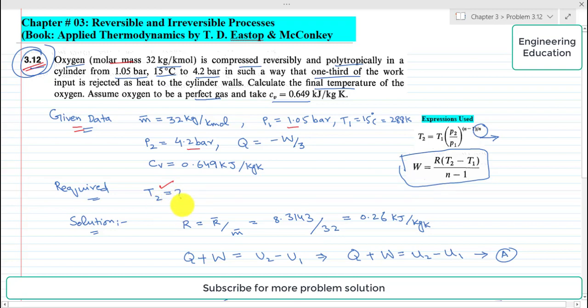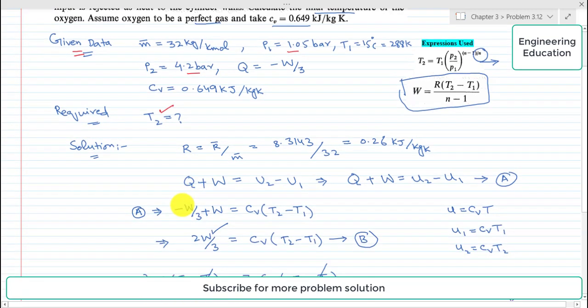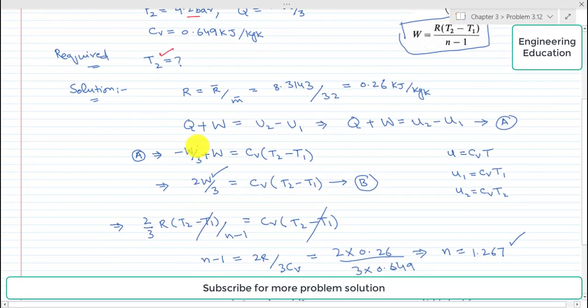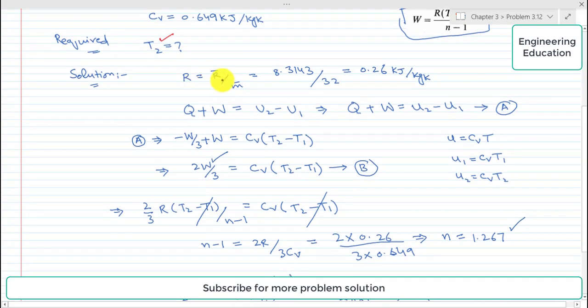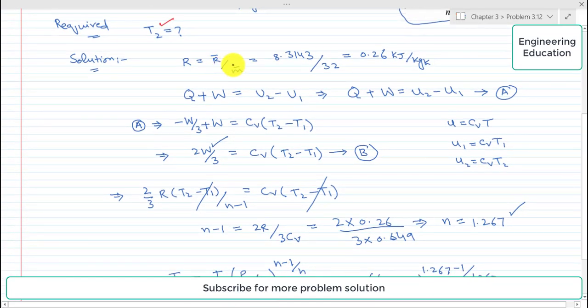So first of all, the value of R is calculated. The value of R is calculated from the expression R is equal to R bar by M bar. The value of R bar is 8.3143 kilojoules per kilomole per Kelvin.